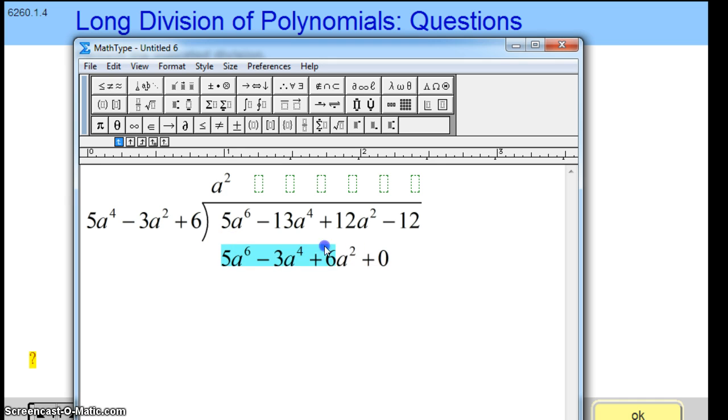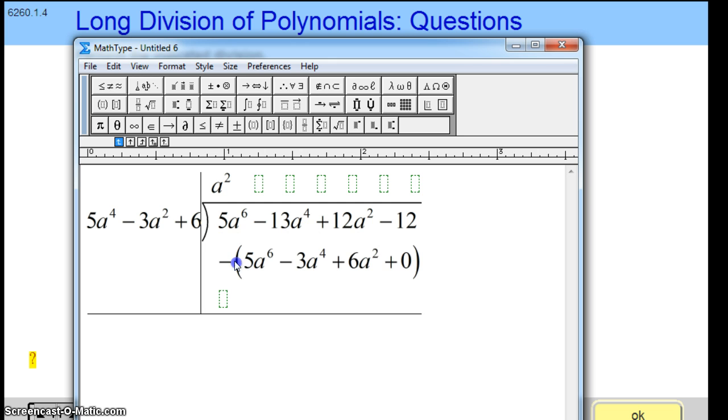Then we subtract this entire thing from what's above it. 5a to the sixth minus 5a to the sixth—that's by design—we get zero. Then minus 13a to the fourth minus minus 3a to the fourth, so it's negative 13a to the fourth plus 3a to the fourth. We get minus 10a to the fourth. Then 12a squared minus 6a squared is plus 6a squared. And minus 12 minus zero is just minus 12.